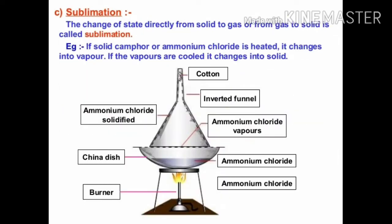Next is sublimation. Sublimation is the change of state directly from solid to gas — meaning there is no liquid stage between them. Solid directly becomes gas; we call it sublimation. This may be new for you, but sublimation happens a lot. For example: camphor, ammonium chloride, and solid CO2, which is also known as dry ice. These substances all undergo sublimation — they directly convert from solid to gas without any liquid state in between. An activity is shown in the diagram so you can understand this concept.